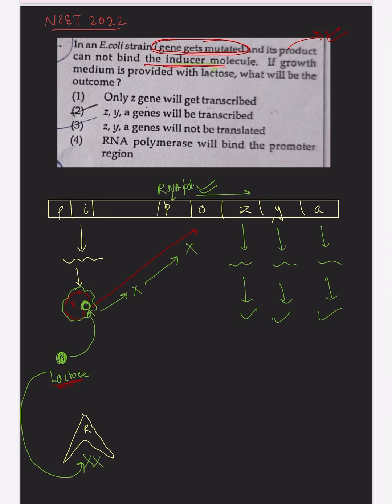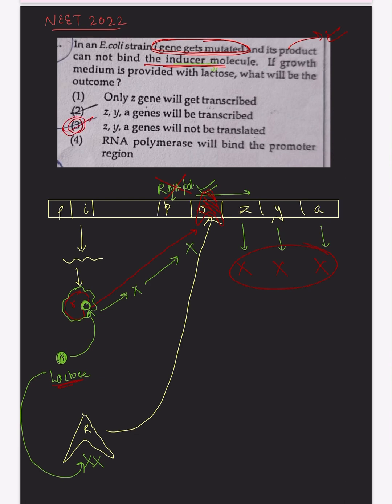Since lactose cannot bind to this mutated repressor, the repressor does not change its shape. It will go and bind to the operator region, which means RNA polymerase will not be able to bind to the promoter. Therefore, the structural genes Z, Y, and A will not be transcribed or translated. So the correct answer is that Z, Y, and A genes will not be translated.